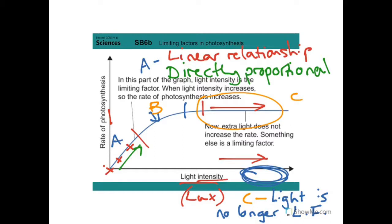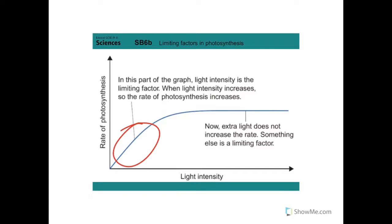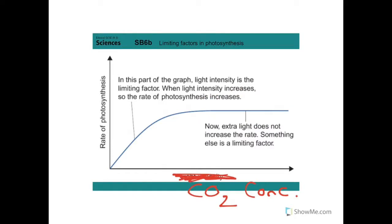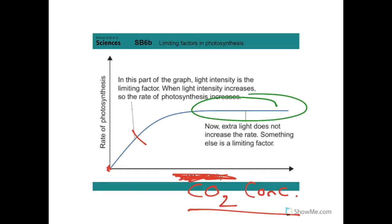We need to be able to describe these graphs. In the first part, it's directly proportional — as light goes up, rate of photosynthesis goes up. In the later part, light intensity goes up but rate stays the same, so light is having no effect and is no longer the limiting factor. A graph for CO₂ concentration would look the same: no CO₂ means no photosynthesis; initially increasing CO₂ increases the rate, but it levels off when CO₂ is no longer limiting. To increase photosynthesis further, you'd need to increase light or change temperature.